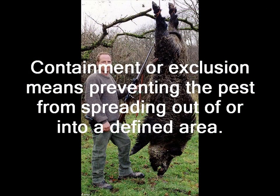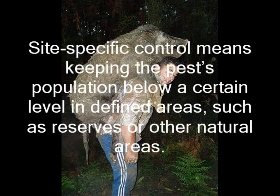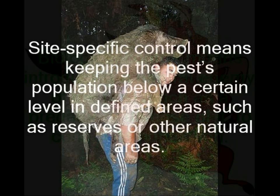Containment and exclusion means preventing the pest from spreading out of or into a defined area. Site-specific control means keeping the pest population below a certain level in defined areas, such as reserves or other natural areas — it can also be in your house or backyard. Biological control means introducing a natural enemy of the pest, such as a predator or disease, to control its population.